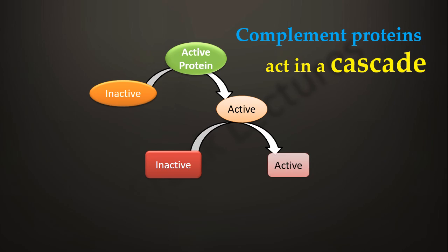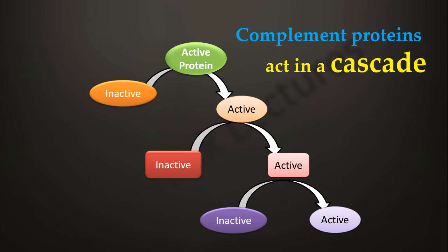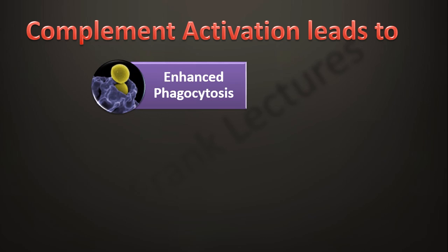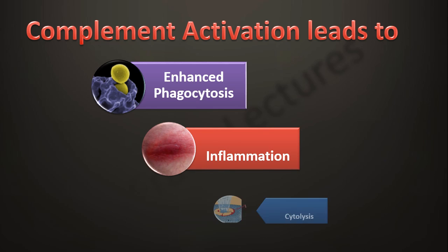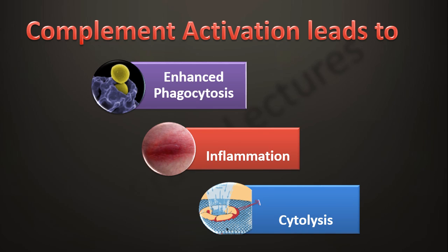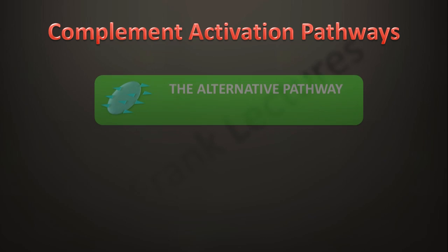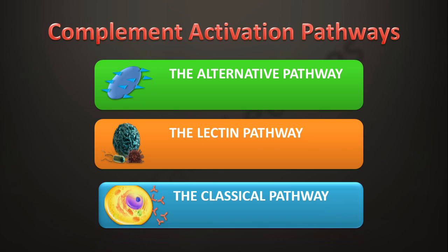Complement activation leads to three major consequences which help in eliminating the pathogen. These consequences are enhanced phagocytosis, inflammation, and cytolysis. We will study each of these consequences in detail later. There are three complement activation pathways, and these pathways differ in how they are initiated and which proteins are involved. These pathways are the alternative pathway, the lectin pathway, and the classical pathway.